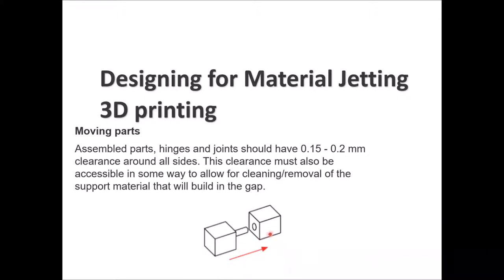If you have moving parts — for example, a male-female engagement assembly — assembled parts such as hinges and joints should have between 0.15 and 0.2 millimeters of clearance on all sides. For instance, if you have a pin and a hole, the hole should be 0.15 millimeters larger in diameter than the pin, or vice versa. This clearance allows for cleaning and removal of any support material embedded in the assembly so it can move freely.